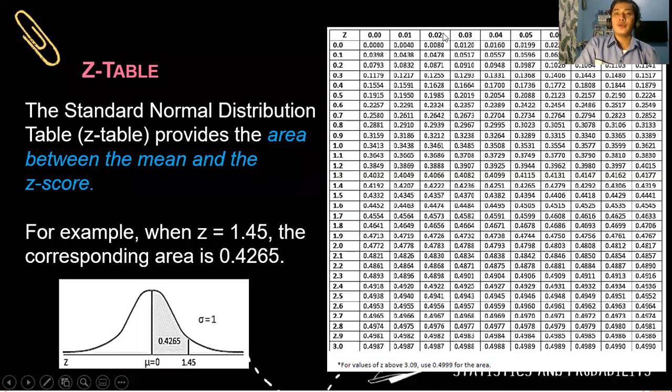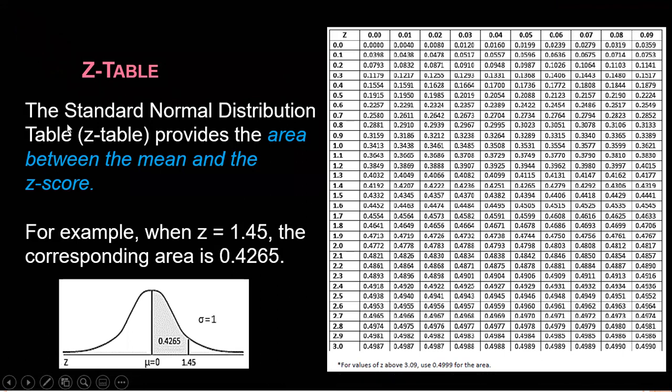So it is also important to know how to use the Z table. Notice a standard normal distribution or the Z table provides the area between the mean and Z score. So what is shown here is only the value from half of the distribution. So it can only provide us up to 0.4990. For values of Z above 3.09, you use the area 0.499 for the area.